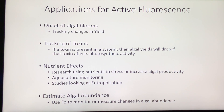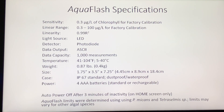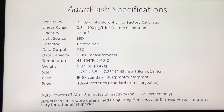Aquaflash also provides a good estimate for algal concentrations as micrograms per liter of chlorophyll. Aquaflash is sensitive down to 0.3 micrograms per liter of chlorophyll and can read up to a maximum of 100 micrograms per liter. These limits were determined using Prorocentrum and Tetraselmis cultures. Limits will vary with respect to species and physiology of algae, among other factors that influence in vivo fluorescence properties.